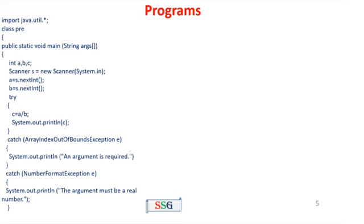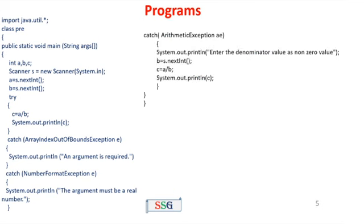We import java.util.* and declare class Pre with public static void main. We declare int a, b, c and a Scanner object. We read a using s.nextInt() and b using s.nextInt(), getting inputs for both a and b in the try block. Then c = a / b and System.out.println prints c. The first catch block handles ArrayIndexOutOfBoundsException and prints an argument-required message. The second catch block handles NumberFormatException. The third catch block handles ArithmeticException and prints 'enter the denominator value as non-zero value'. Then b = s.nextInt() and c = a / b, followed by System.out.println. The closing braces close the main method and the class.